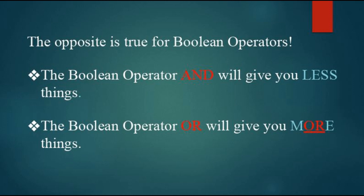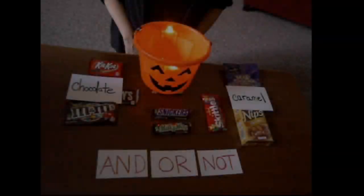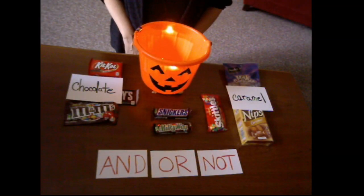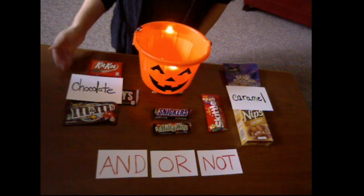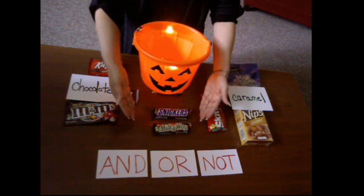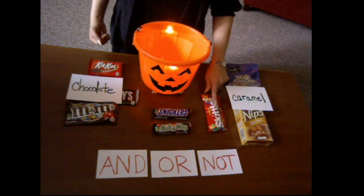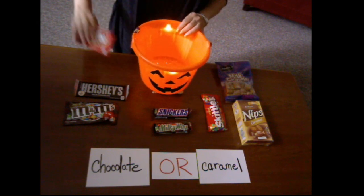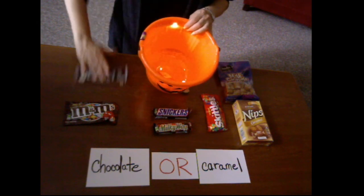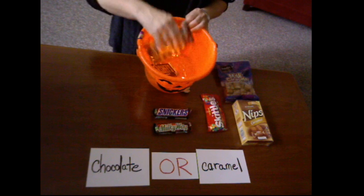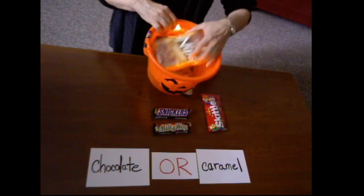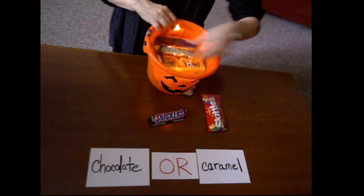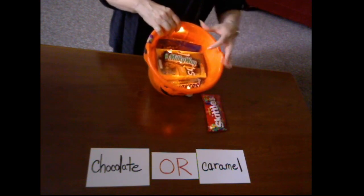How can this be so? Let me show you what I mean by using a table full of Halloween candy. Some of the candies on the table contain chocolate. Some contain caramel. Some contain both. And some contain neither. A Boolean search of chocolate OR caramel will fill the Halloween container with ALL the candy that contains chocolate and ALL the candy that contains caramel — including candy that contains both, like the Snickers and the Milky Way. So many options!